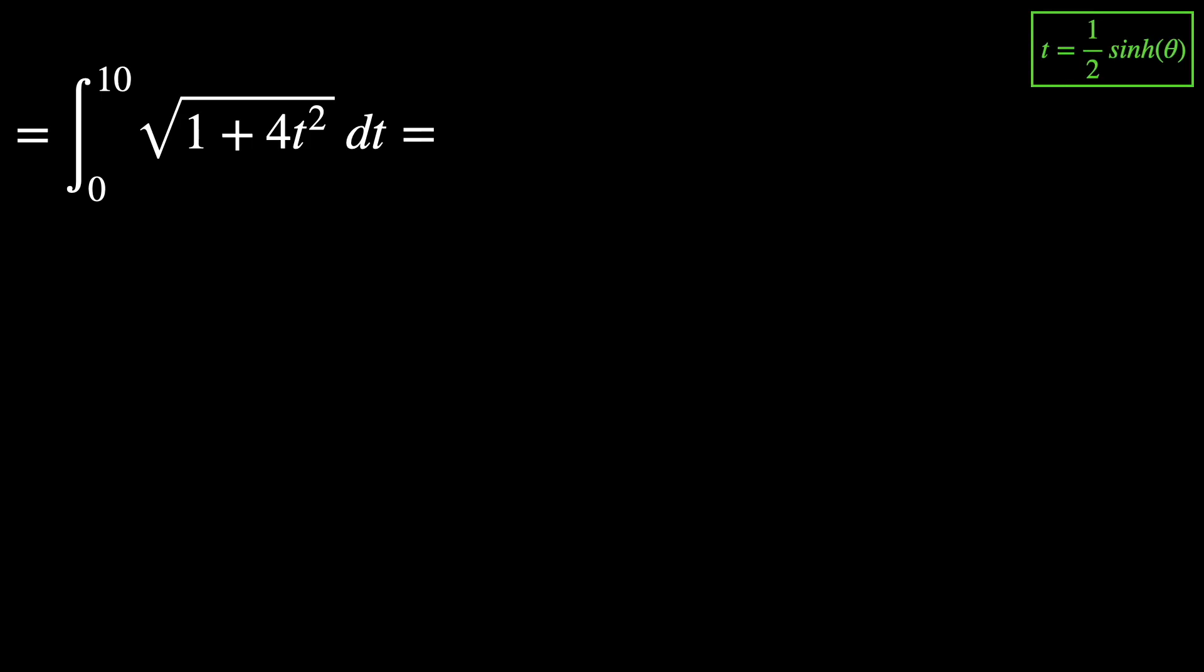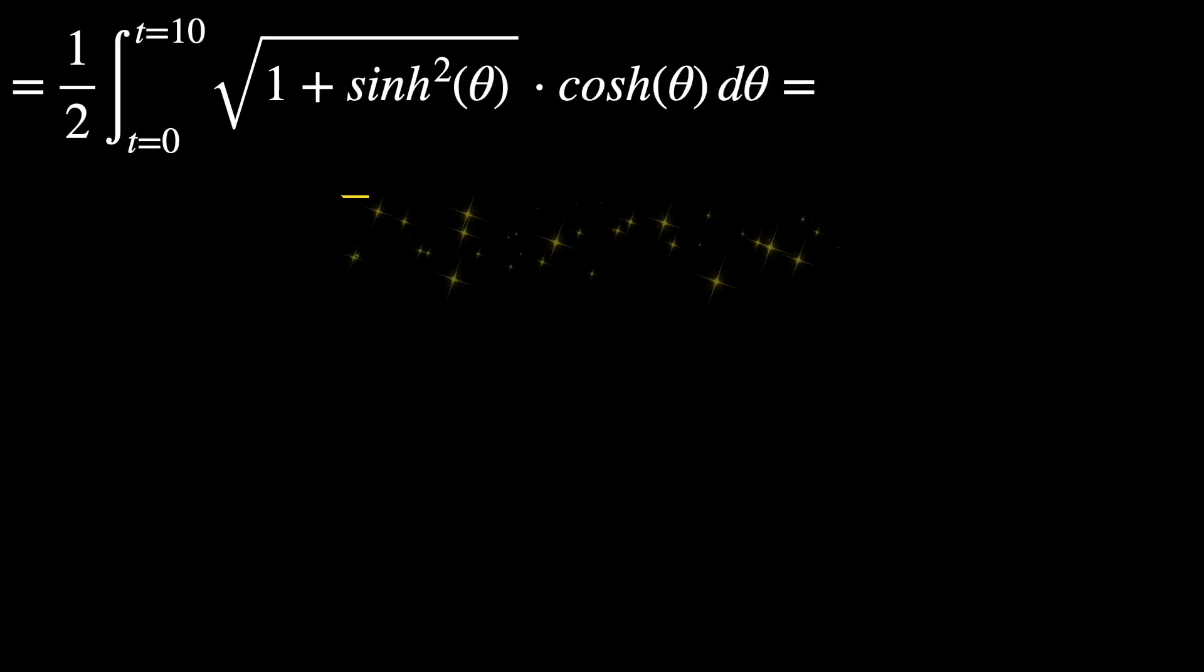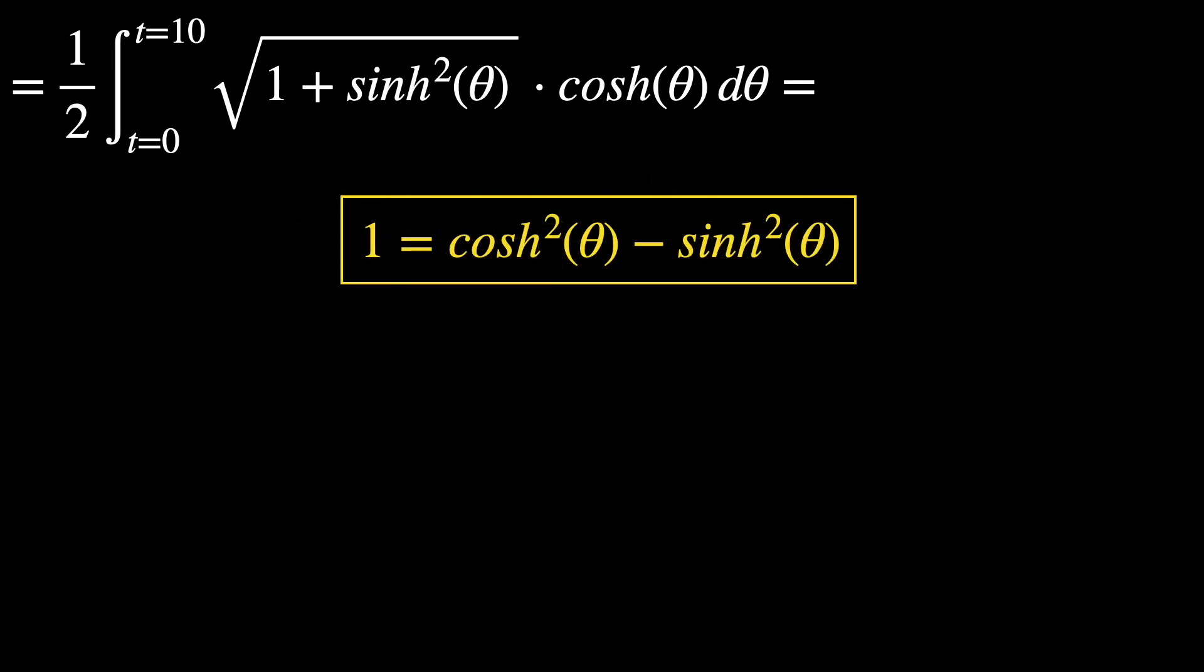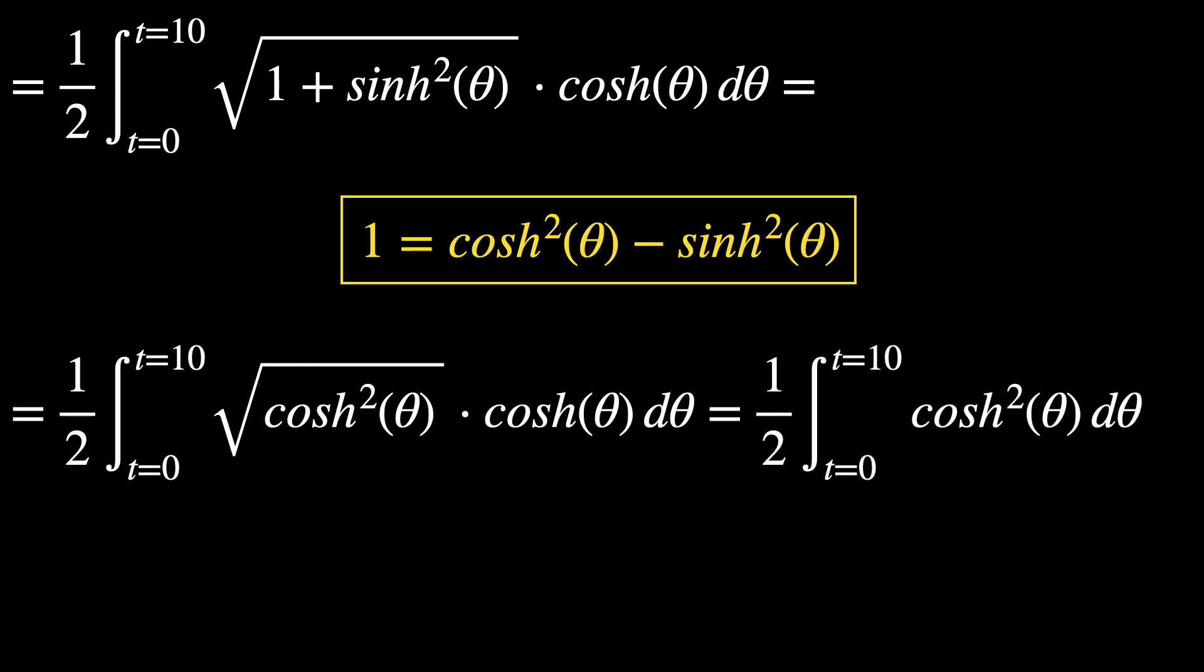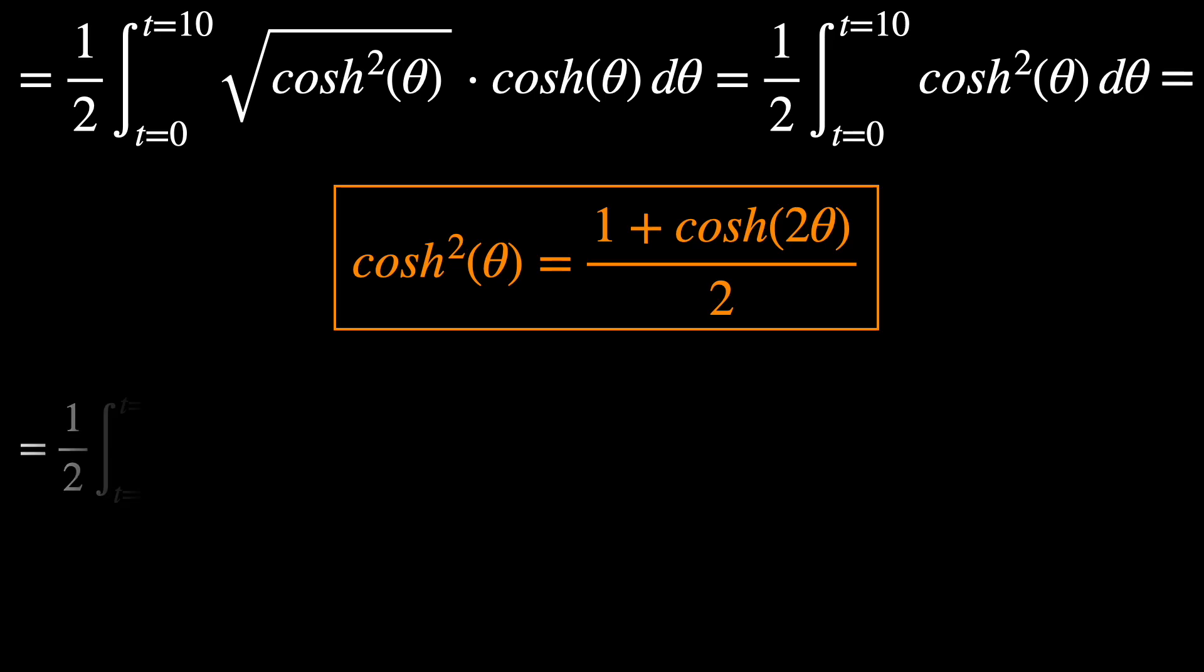Let's perform a change of variables here, where T is going to be defined as a half hyperbolic sine of theta and as a consequence its derivative is going to be hyperbolic cosine of theta. This lets us write the integral this way. At this point, we can use the following trigonometric identity: 1 is equal to the hyperbolic cosine of theta squared minus the hyperbolic sine of theta squared. So we can write this integral as this. And the next trigonometric identity we will use here is this one. The hyperbolic cosine of theta squared is 1 plus the hyperbolic cosine of 2 theta, all of it over 2.